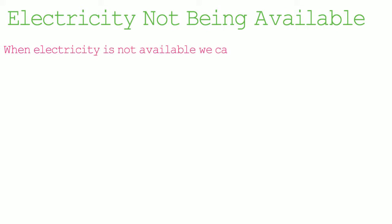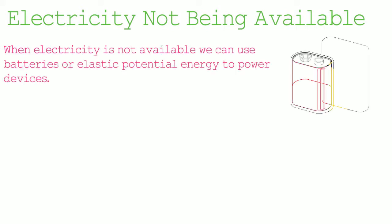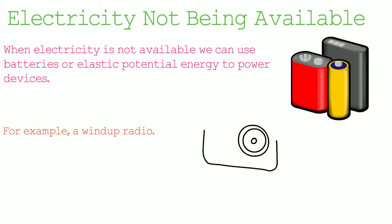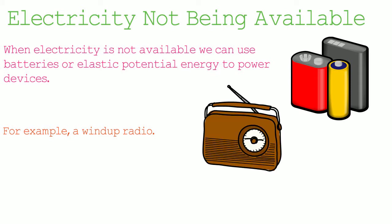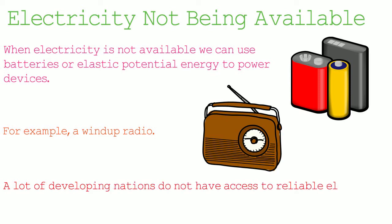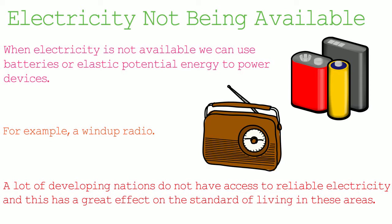The final part of this video looks at when electricity is not available. When electricity is not available, we can use batteries or elastic potential energy to power devices — for example, a wind-up radio, where the user winds up the radio and the elastic potential energy slowly releases to power it. Many developing nations lack access to reliable electricity, which greatly affects their standard of living. For instance, hospitals may not be able to use equipment such as X-rays or MRI scanners, and may not be able to operate due to poor lighting. Unreliable electricity also affects food safety and communications.